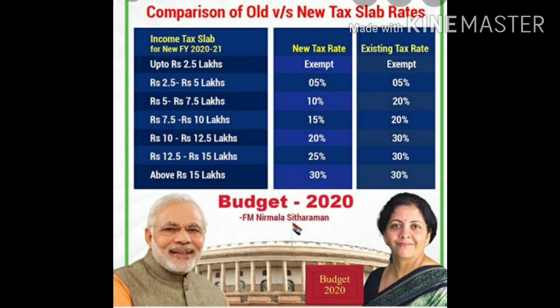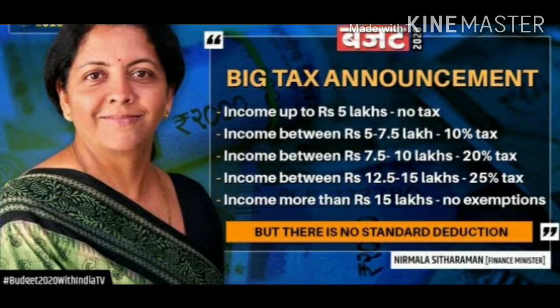Every year the rules for computing income tax are changed, so it is important to know the latest rules. As per the Budget 2021, the exemption is five lakhs — meaning up to five lakhs, no tax.